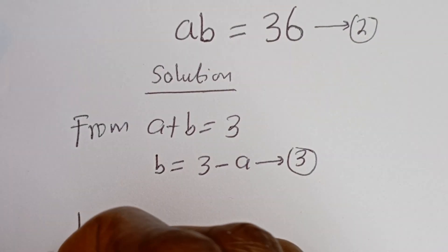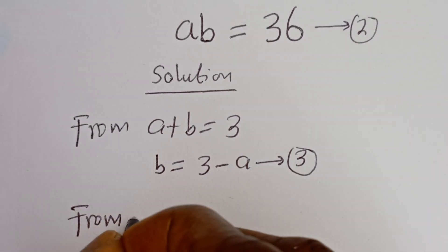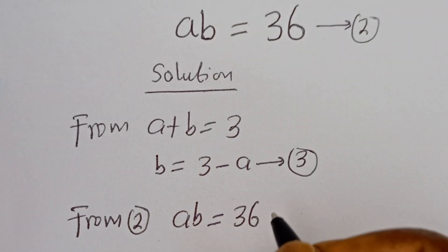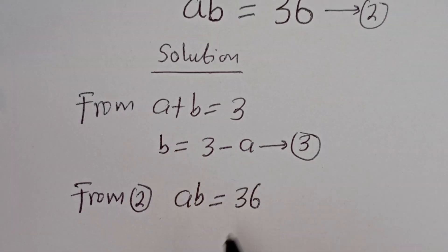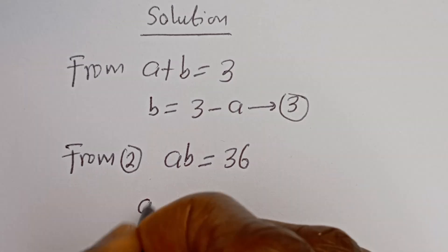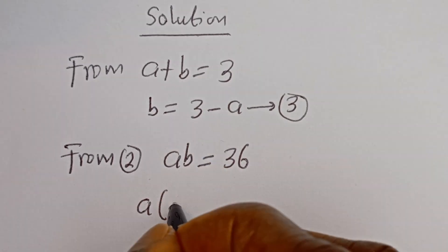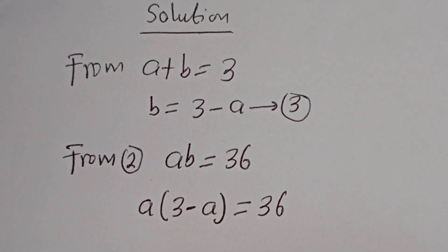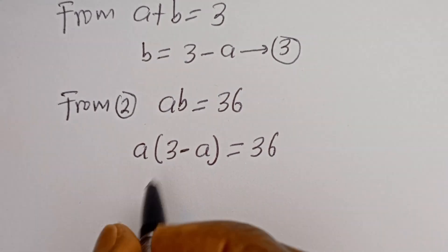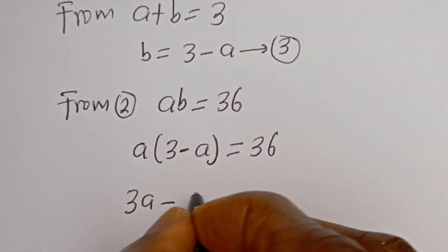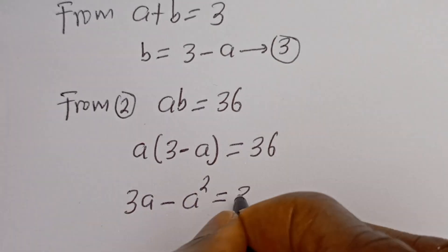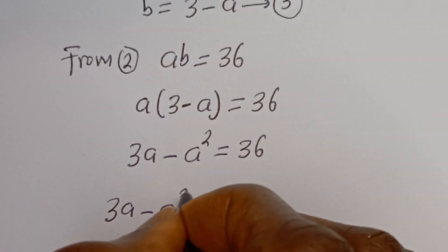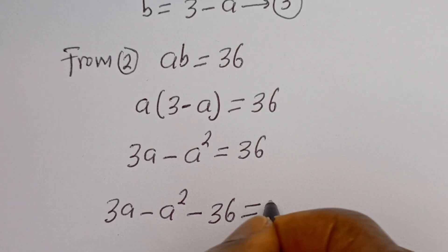Also from equation 2, AB is equal to 36. Now let's substitute for B here. We have A times (3 minus A) is equal to 36. Now let's open the bracket: A multiplied by 3 gives 3A, minus A times A gives A squared.